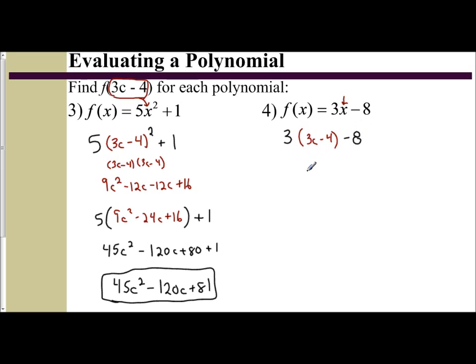And then just distribute and combine like terms. You get 9c minus 12 minus 8. Then negative 12 and negative 8 give you negative 20.